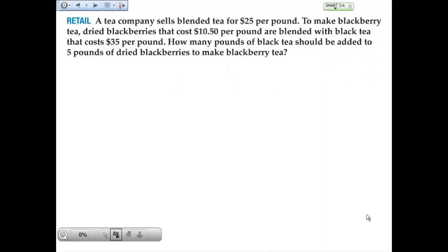Here's a real-world example. A tea company sells blended tea for $25 a pound. To make blackberry tea, dry blackberries that cost $10.50 a pound are blended with black tea that costs $35 a pound. How many pounds of black tea should be added to five pounds of dry blackberries to make blackberry tea? There is a problem with this problem: there is no profit involved. The equation is set up so the cost for the business owner equals what he's selling it for — which is a good way to go out of business really, really quickly. You have to make money when you sell things.